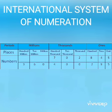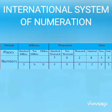In the international system also, periods are counted from right to left. But when we read the number, we read it from left to right.